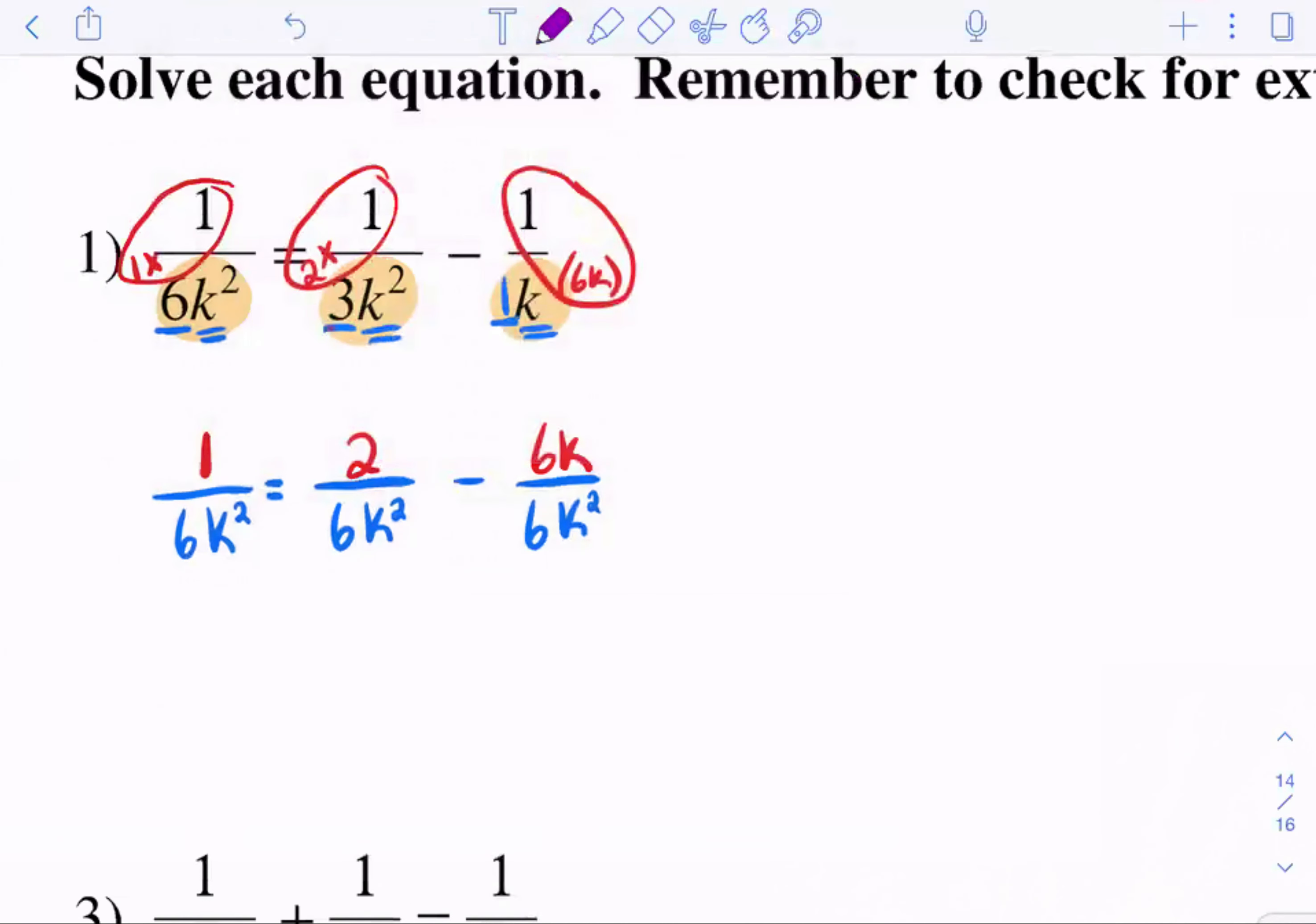Now that all the denominators are the same, we actually can reduce them and rewrite this equation. One equals two minus six K. Can we solve this equation now? I think we can. Your first step is to subtract the two. Then your next step is to divide by negative six. Don't forget a negative divided by a negative is a positive.